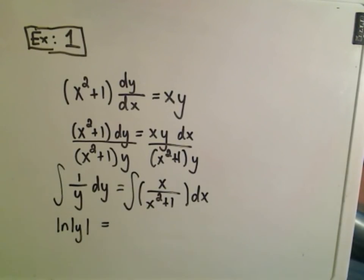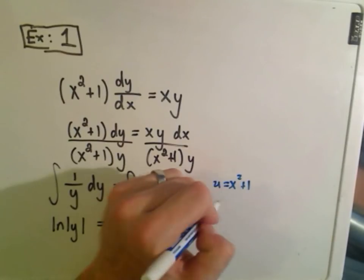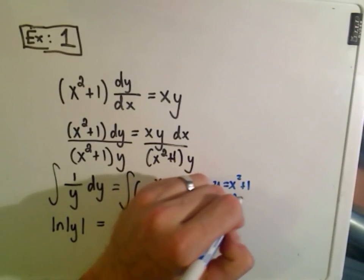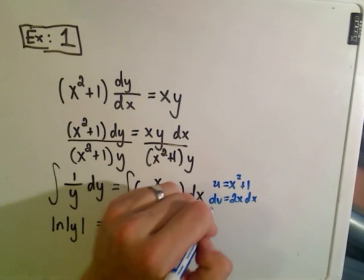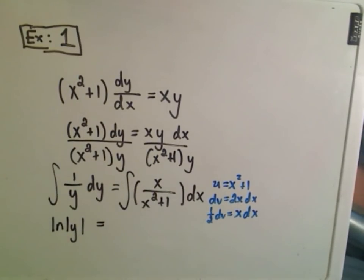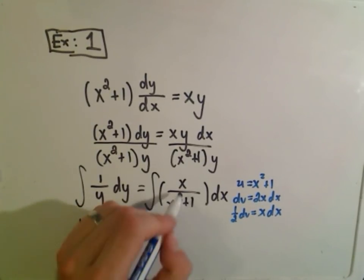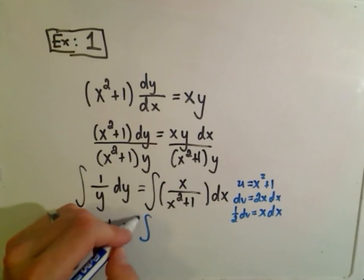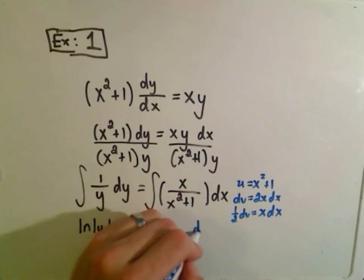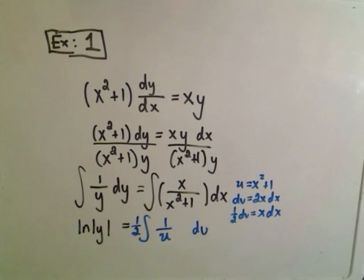To integrate the right side, I would have to do a u substitution. I would let u equal x squared plus 1. du would be 2x dx. So then I would get 1 half du equals x dx. So then when I go to integrate, it says really I'm going to be integrating, well, x dx is replaced by the 1 half du. And then I'm just going to have 1 over u left over.